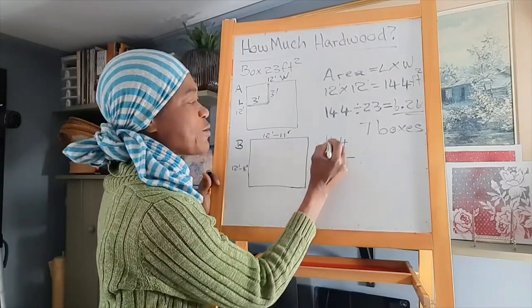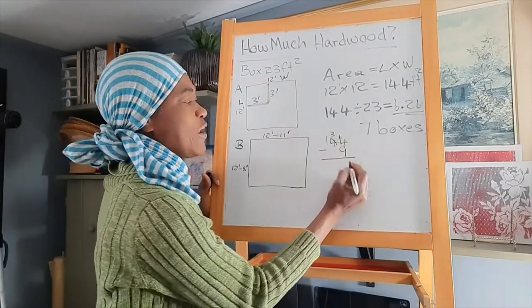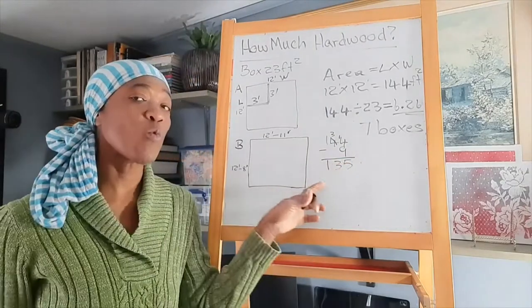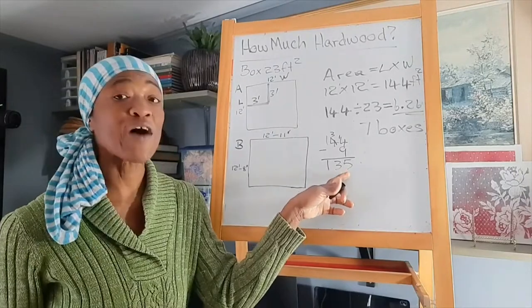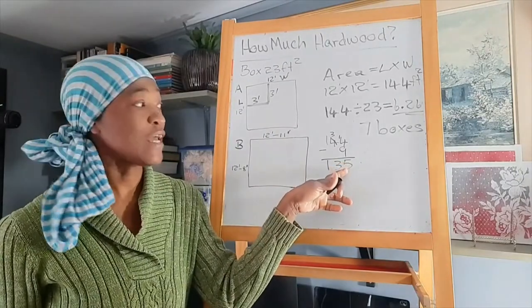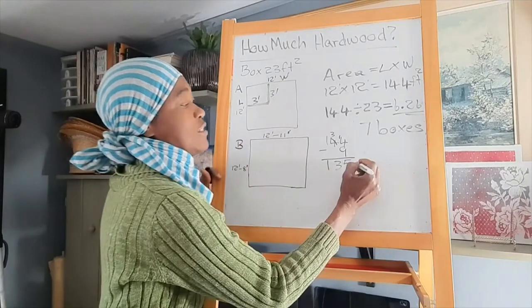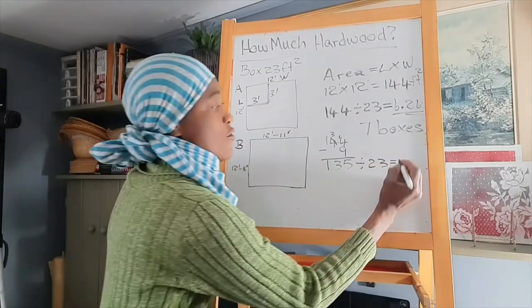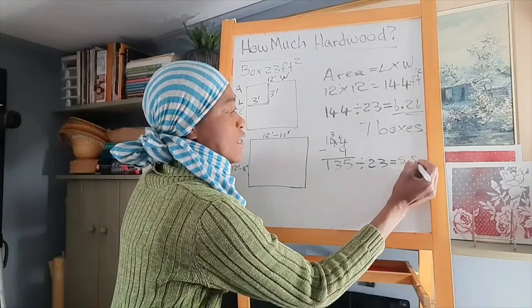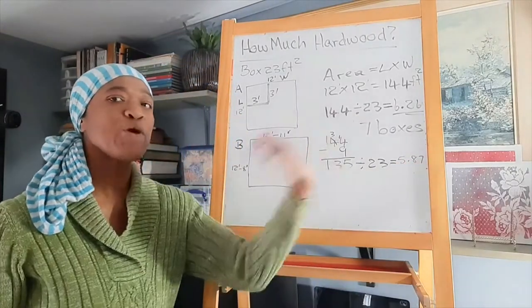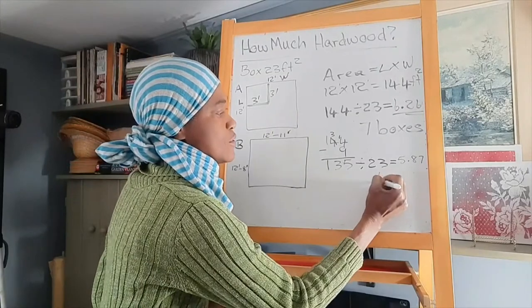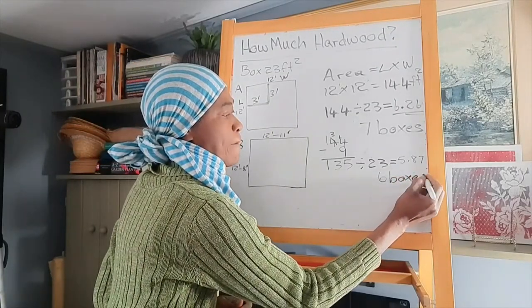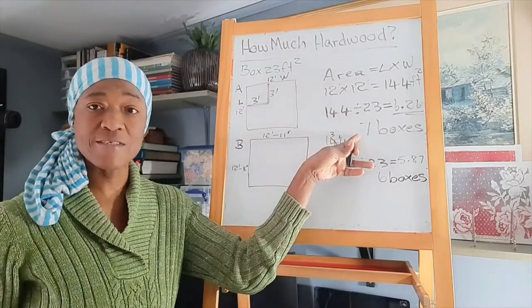And that will give you, take one here, three carry one, five, three, that will give you 135. Then you take your 135 and divide that by 23, which is 5.87. And then we round up to six. So we'll need six boxes instead of seven boxes.